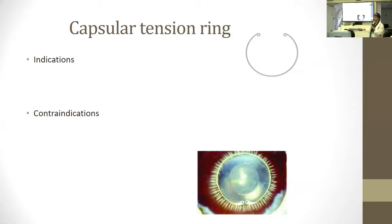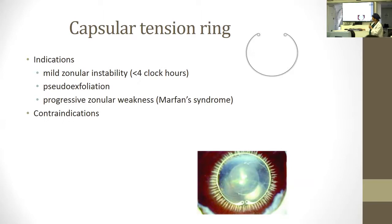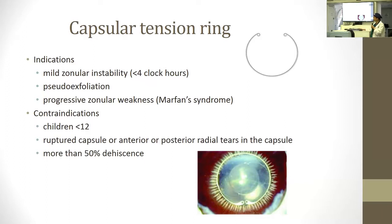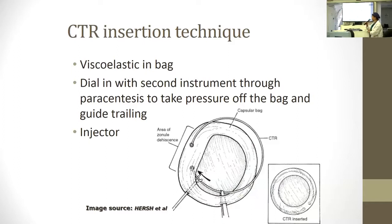Sometimes with a zonular dehiscence you're still trying to use the capsular bag for the lens implant, but you may need a capsular tension ring to stabilize the capsule. We use capsular tension rings if there's less than four to six clock hours of zonular dehiscence. Some people use them in all cases of pseudoexfoliation and all cases of progressive zonular weakness like Marfan syndrome. You can't use them in children, if there's a ruptured capsule, or if there's very significant dehiscence.